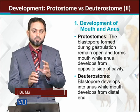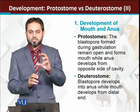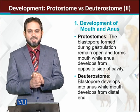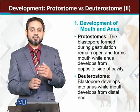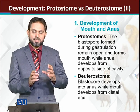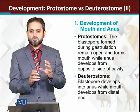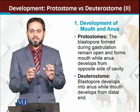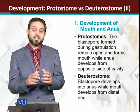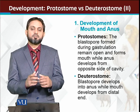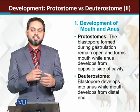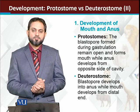In case of protostomes, the blastopore which is formed during gastrulation is ultimately converted into the mouth. During gastrulation, in most cases the blastopore remains open and it is developed into the mouth.